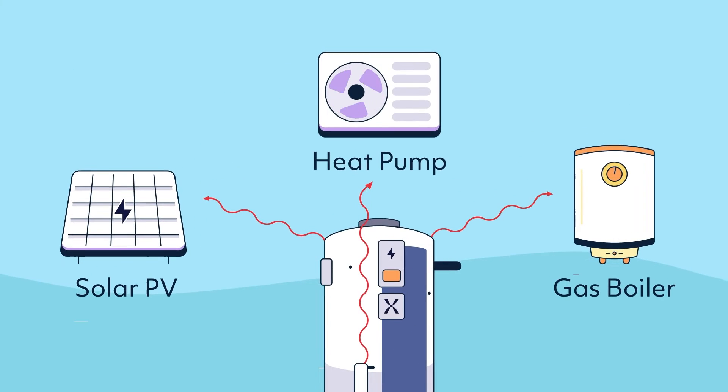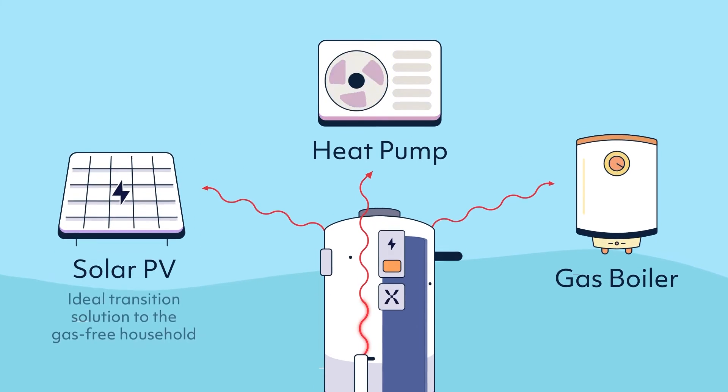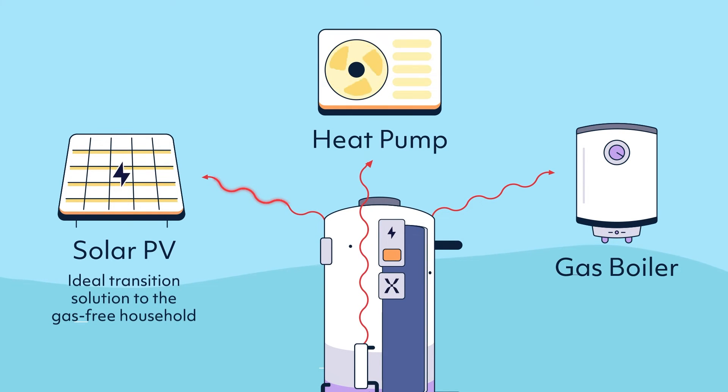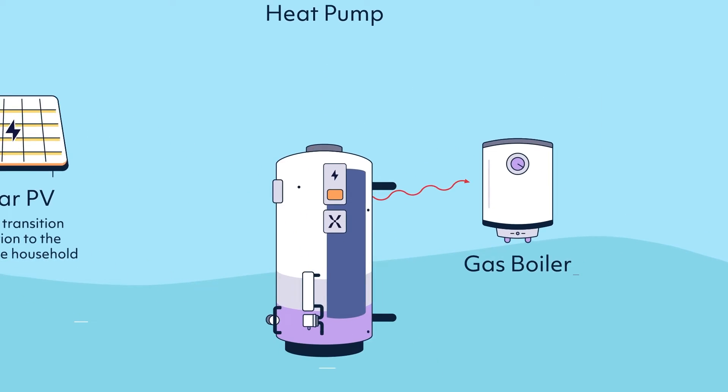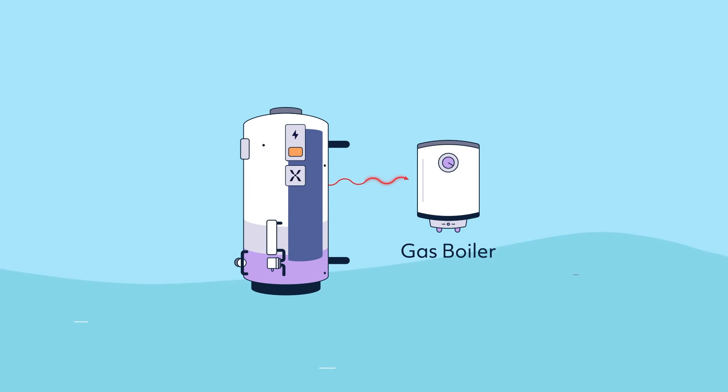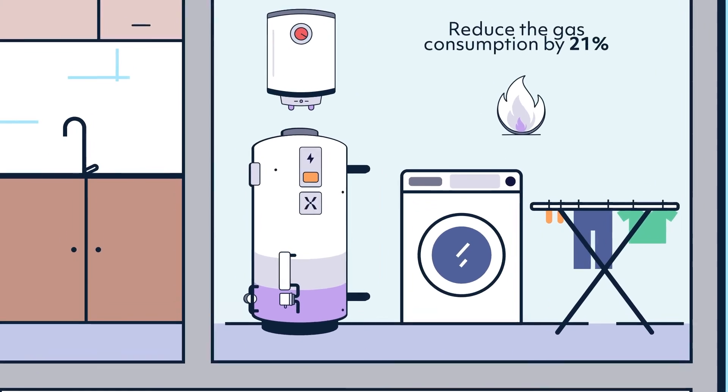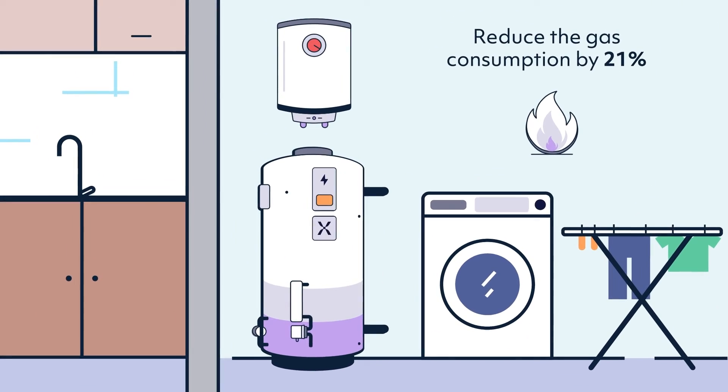Here's how it works with a gas or oil boiler. Mixergy is the ideal transition solution moving towards a gas-free world. The tank simply connects to the boiler delivering our top-down and controllable heating. This can reduce the gas consumption by as much as twenty one percent.